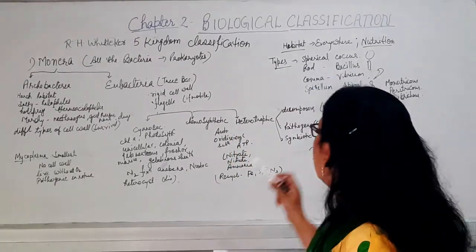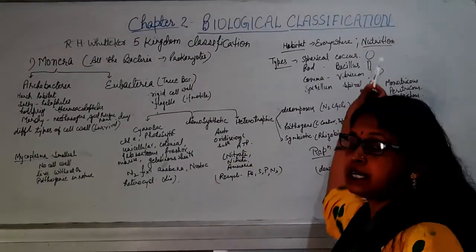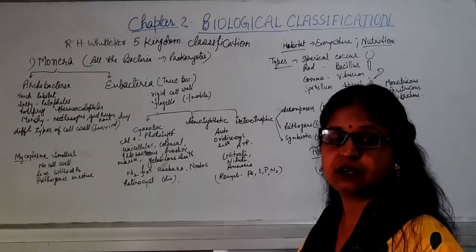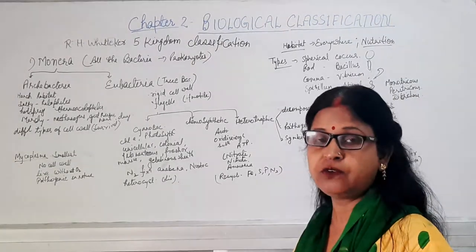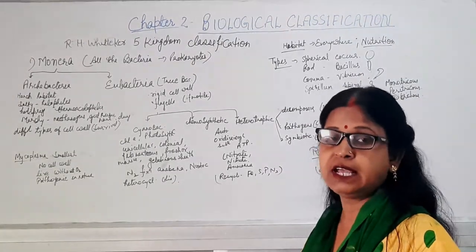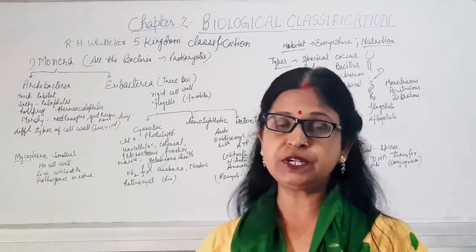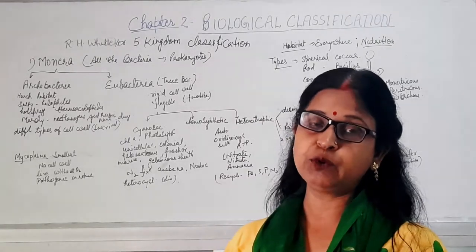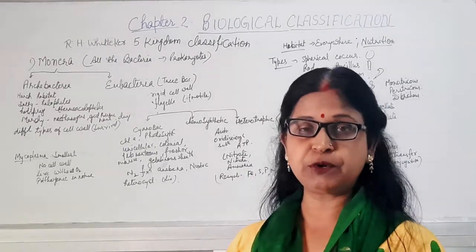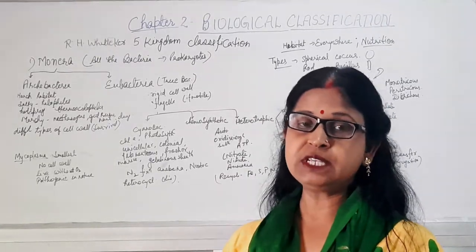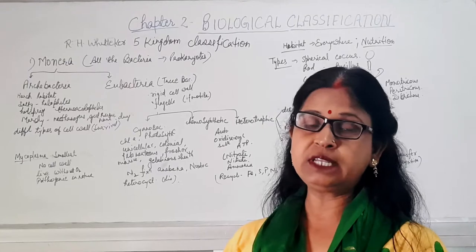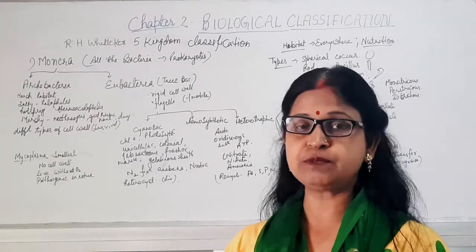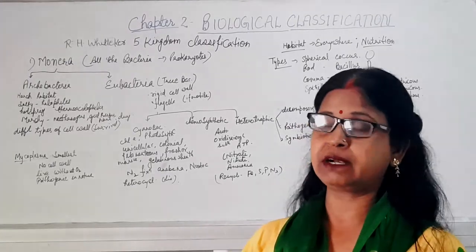Nutrition modes include phototrophs, chemotrophs, and heterotrophs. Some heterotrophs are pathogenic in nature and some are decomposers, also known as saprotrophs. In this way, all types of nutritional modes are present in bacteria.